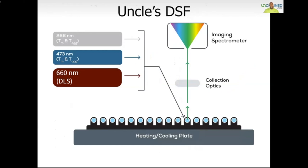When it comes to DSF, UNCLE really raises the bar. The platform has three lasers, two of which are the focus of this presentation: the 266 nm laser, used for measurement of the intrinsic fluorescence of proteins, and the 473 nm laser, used for measurement of the extrinsic fluorescence of molecules with dyes. As the samples are read, all wavelengths are scanned and collected simultaneously using a CCD spectrophotometer, allowing you to capture a full spectrum at once — just like your smartphone captures a full color picture with every snapshot. UNCLE is faster than traditional fluorometers, which scan one wavelength at a time, and it is also much more sensitive, optimized for UV and fluorescence applications.